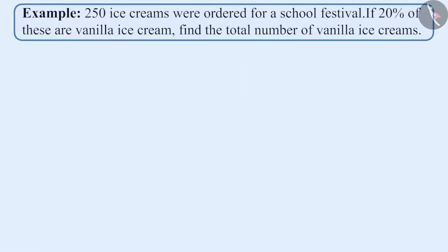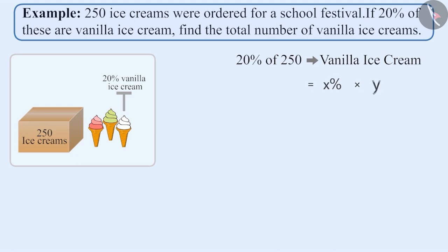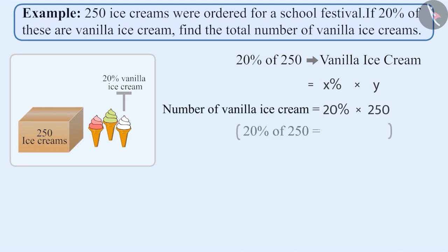Next example: 250 ice creams were ordered for a school festival. If 20 percent of these are vanilla ice cream, find the total number of vanilla ice creams. Here, out of 250, we need 20 percent of vanilla ice cream, that is 20 percent of 250. Since x percentage of a number y equals x percent into y, the quantity of vanilla ice cream equals 20 percent into 250.